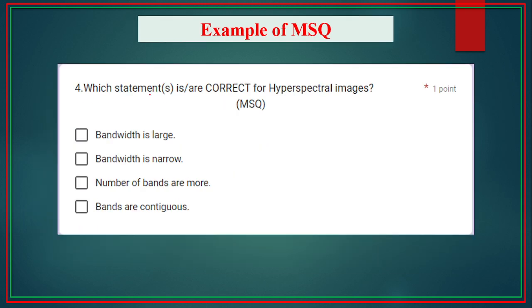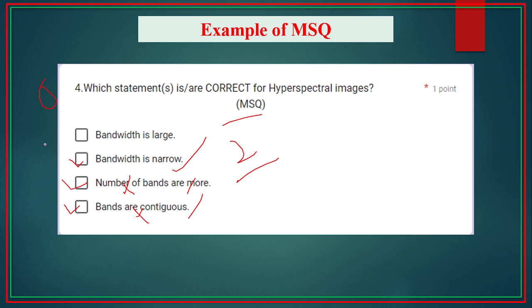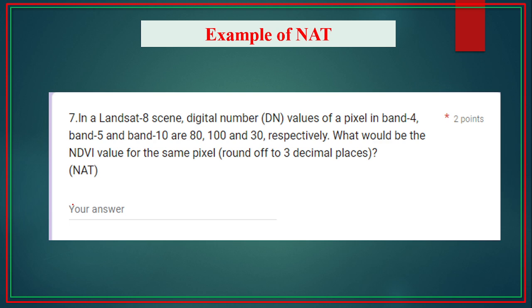For MSQ, for example: 'Which statements are correct for hyperspectral images?' — you need to choose more than one option. The correct answers are: bandwidth is narrow, number of bands is more, and bands are contiguous. If you get all correct options you get 2 marks. But if you choose only some correct options you get 0 marks — no partial marking is available for MSQ. Then for NAT (Numerical Answer Type), you calculate and enter the answer — also no negative marking.